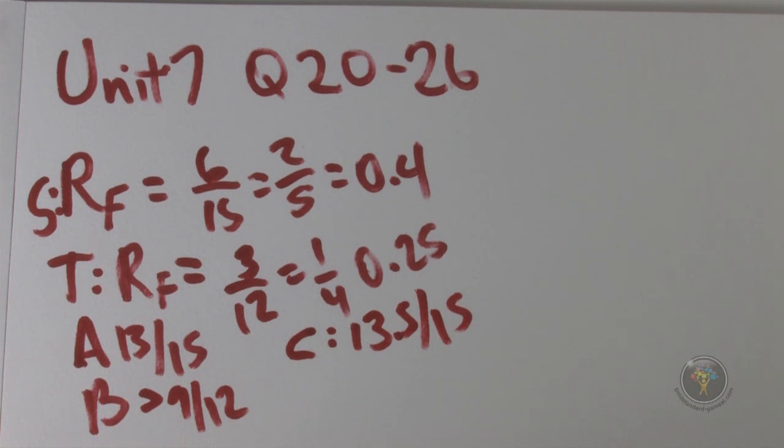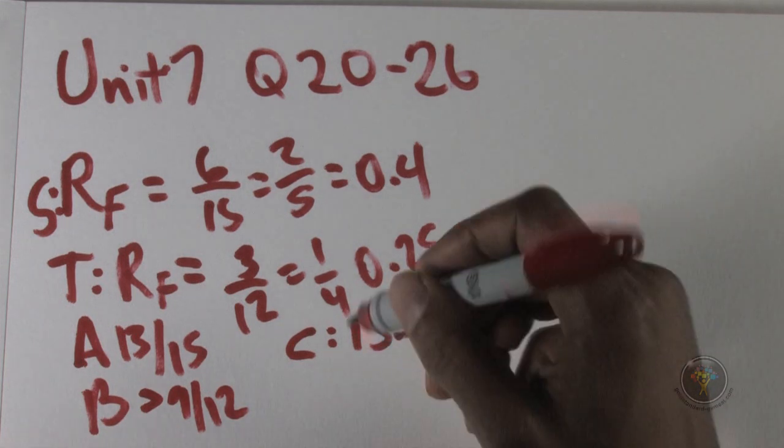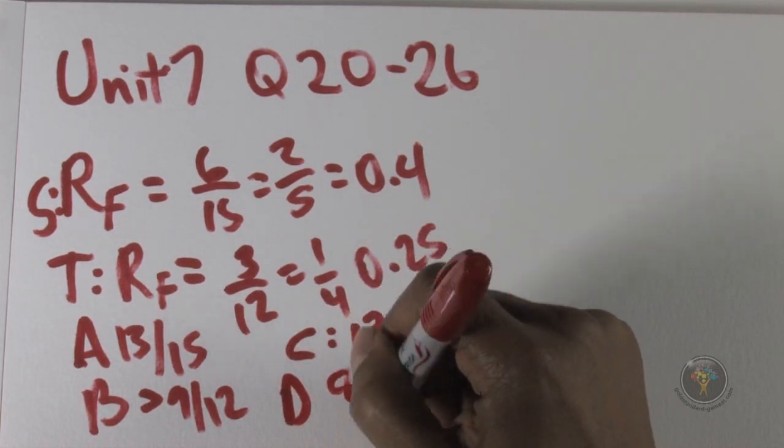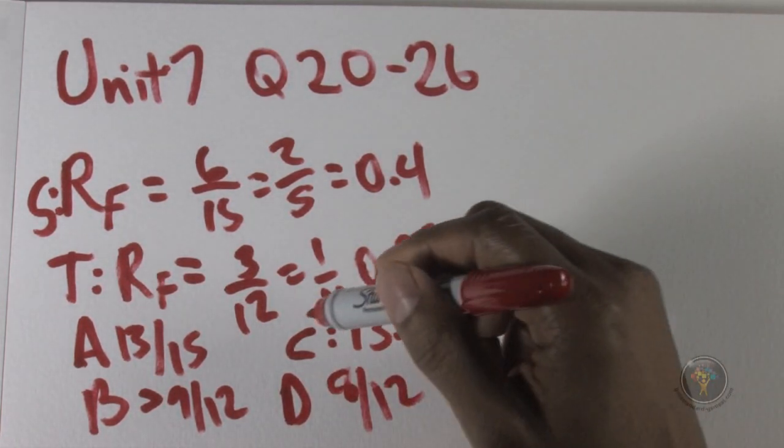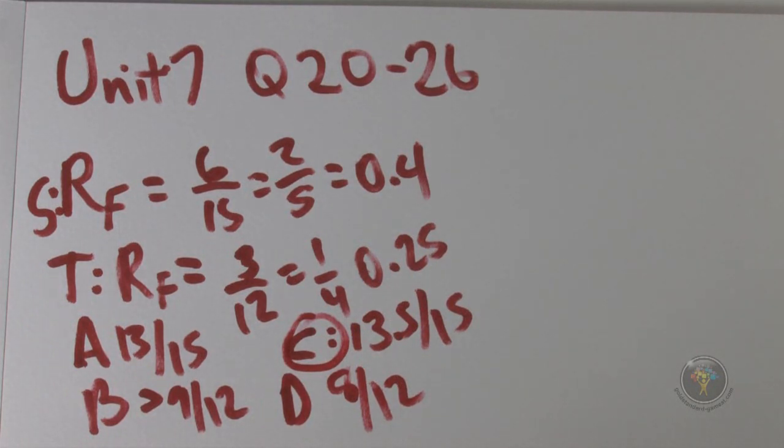And then next is phenylalanine in solvent T. Phenylalanine again, the oval, and we see it in the middle that looks like 8 out of 12. So D is 8 out of 12. So clearly C wins the day. That's the highest number. Nothing's close.